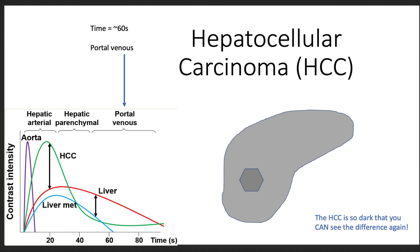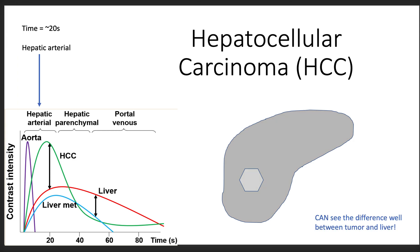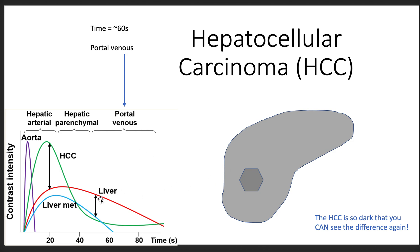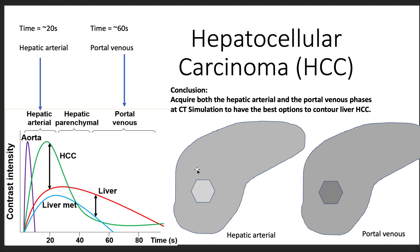Reviewing that: no contrast, everything looks the same. In the arterial phase, things are brighter and we can see a big difference between the HCC and the liver. Between the arterial and venous phase, the HCC is not as easy to distinguish. In the portal venous phase, the HCC is much darker than the liver and we can see a big difference. In conclusion, for hepatocellular carcinoma, you want to acquire both the hepatic arterial phase and the portal venous phases at CT simulation to have the best options to contour liver HCC, using scans from each phase to ensure all components of the HCC are covered.